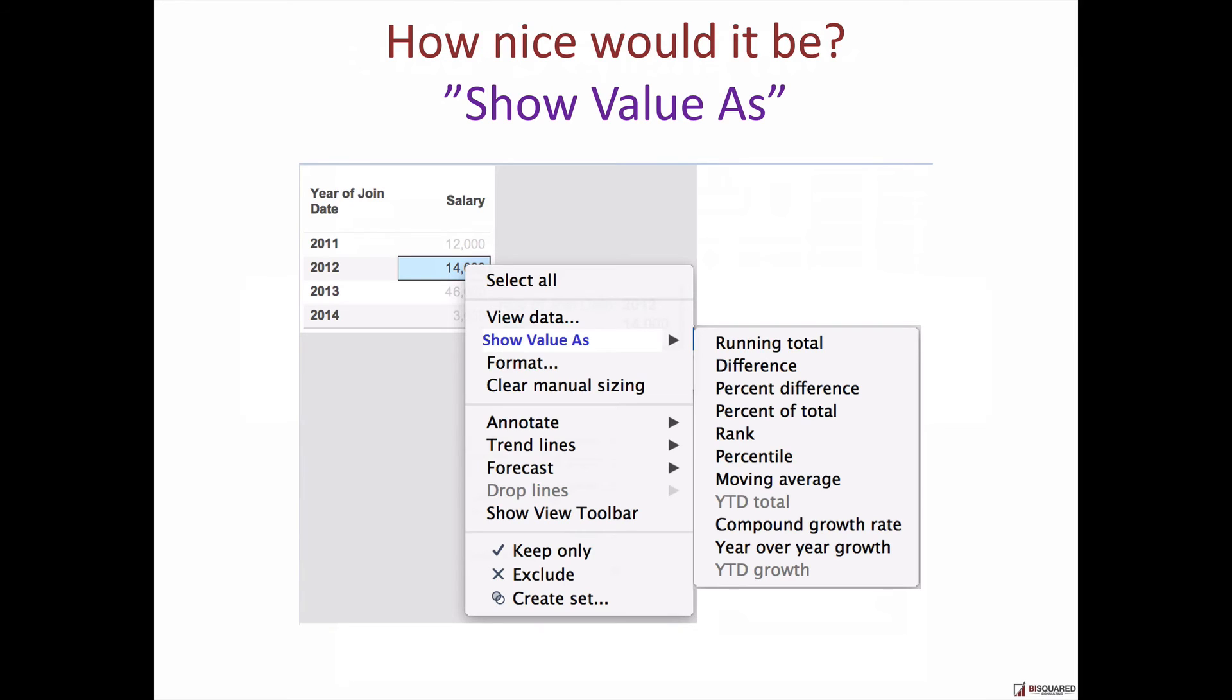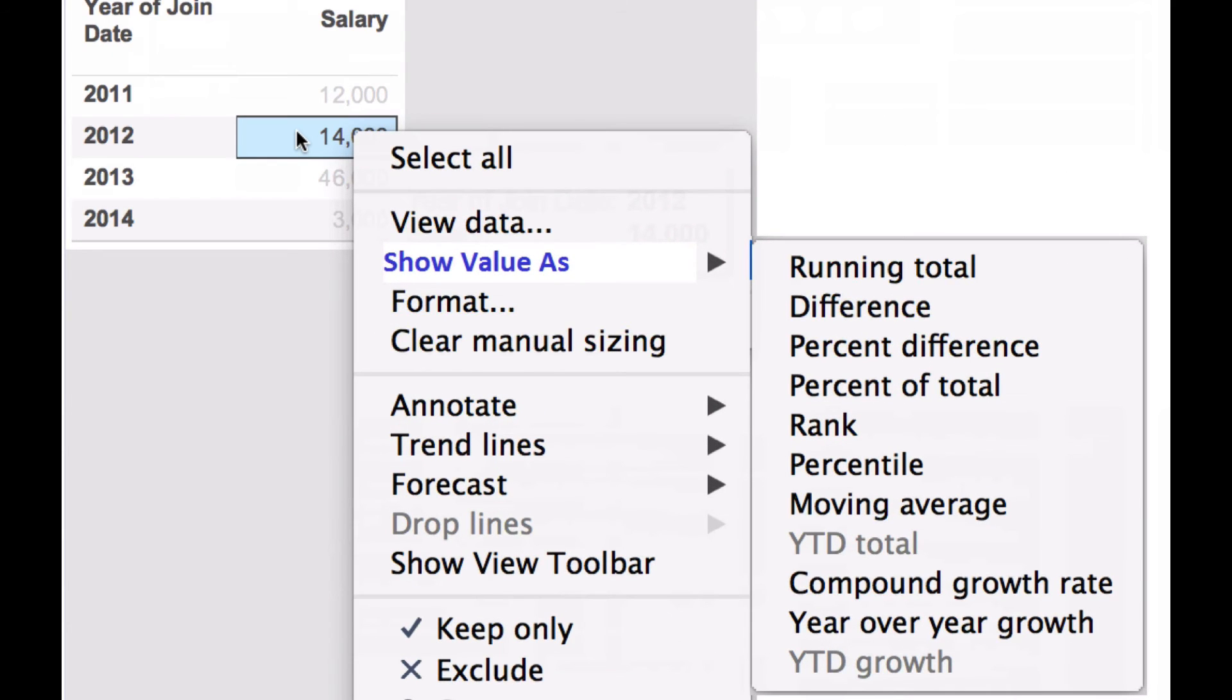So you are looking at some number in a report or a view and then you're right-clicking on that. Instead of seeing this raw value, I want to show it as a percentage of something else, as a rank compared to other values, as a running total. How intuitive this is. How nice it would be if Tableau had a menu like this. I right-click on the salary as in Excel and then I see this menu Show Value As - running total and all of this. Then I feel there's no need for these pages and pages of explanation about what table calculations are and when to use them.